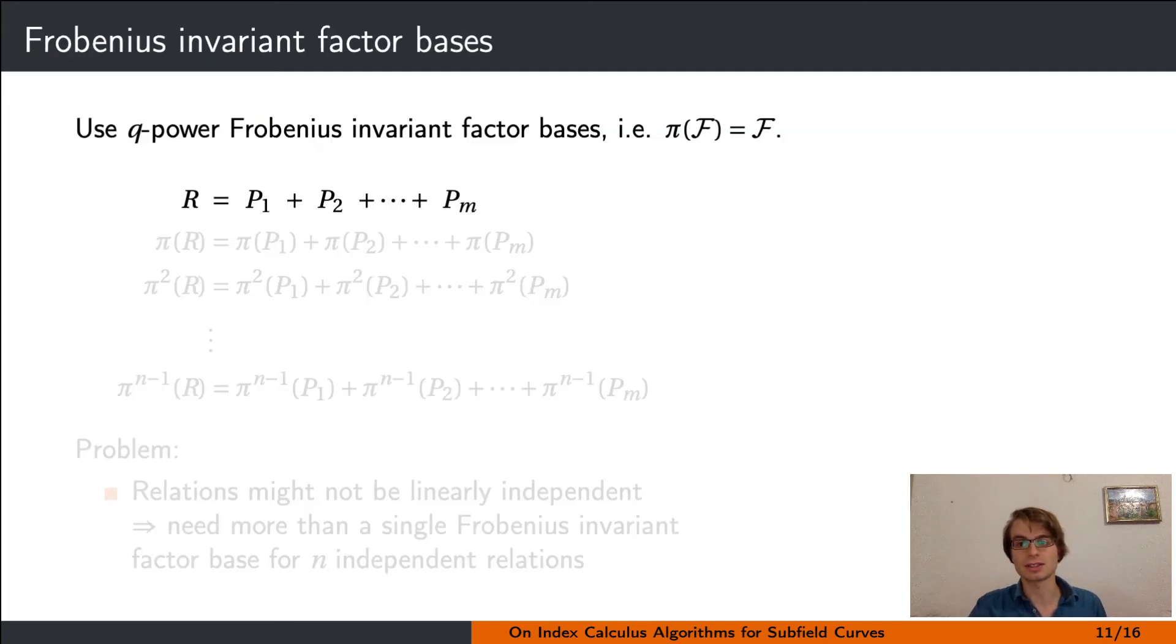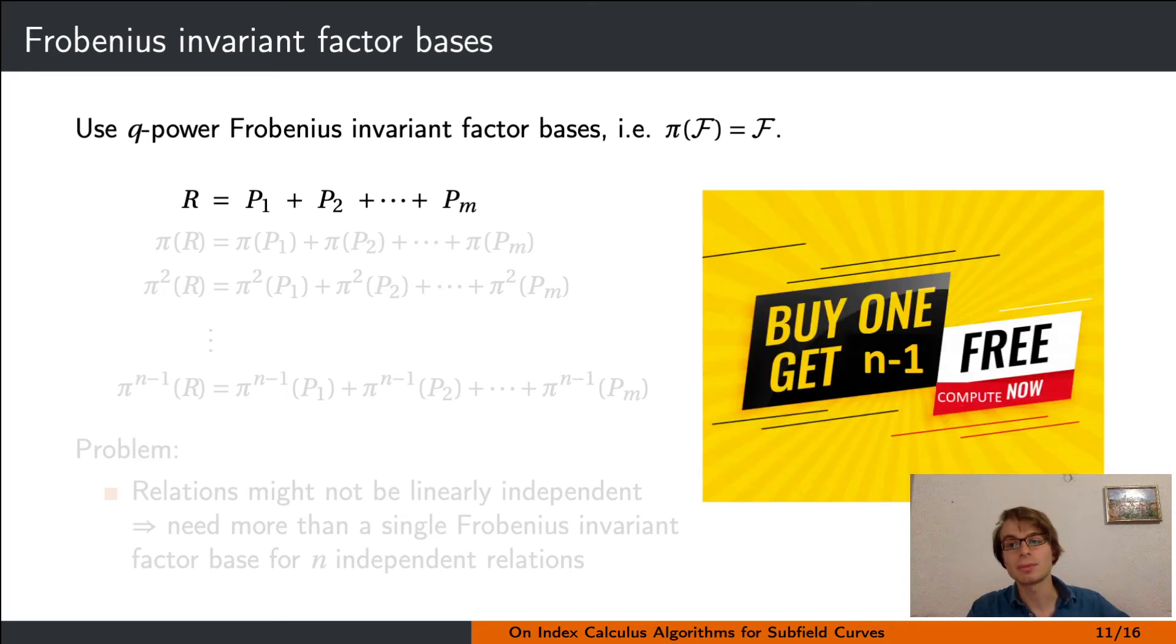Another idea is to choose a factor base that is actually closed under the Frobenius endomorphism. Given one relation with respect to that factor basis, we can then apply the Frobenius endomorphism to the entire relation to generate further relations. Since the factor base is closed under the Frobenius endomorphism, this gives another decomposition of a point on the left-hand side and factor base elements on the right-hand side. The Frobenius endomorphism is of order n, so this looks like a good deal.